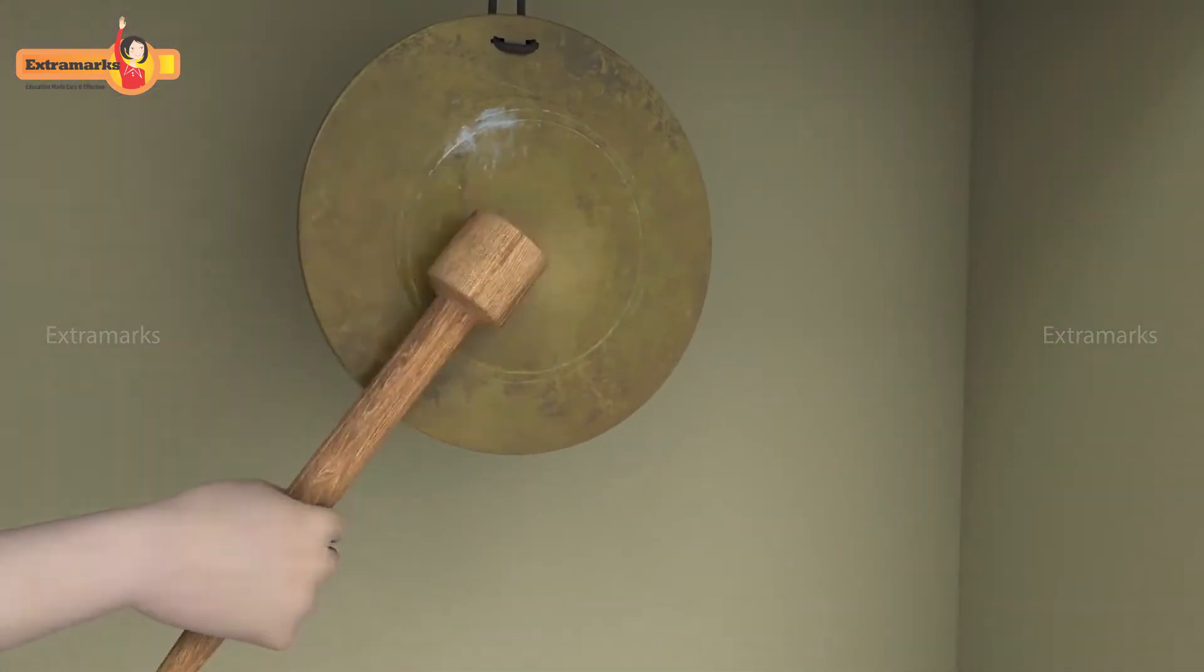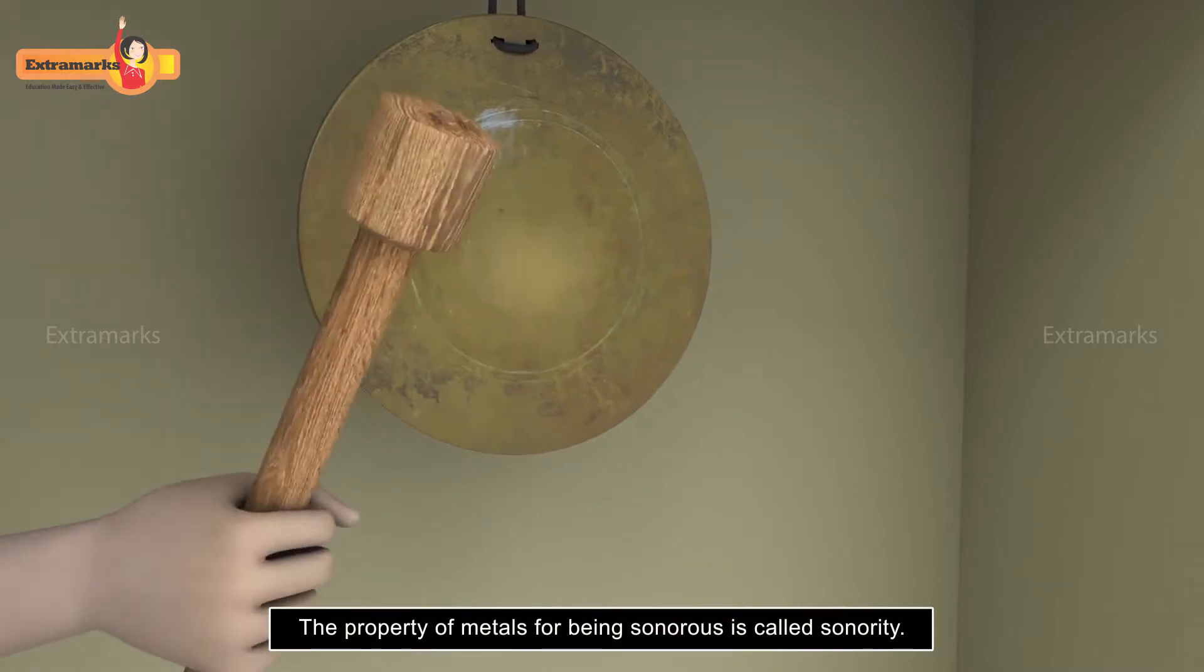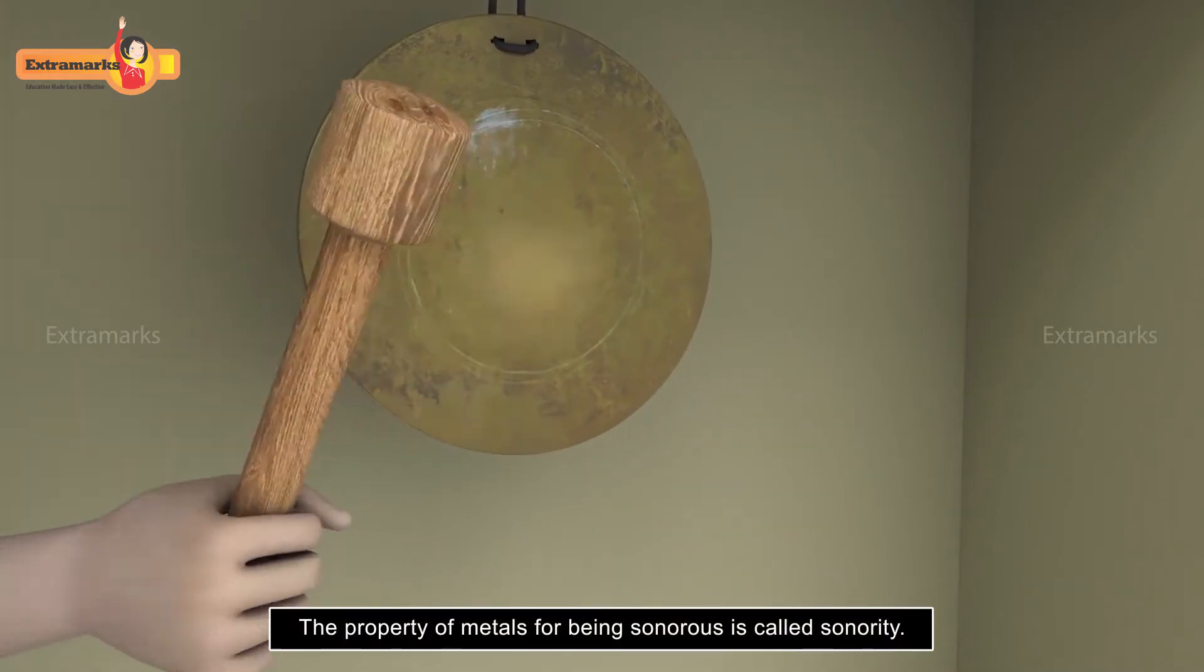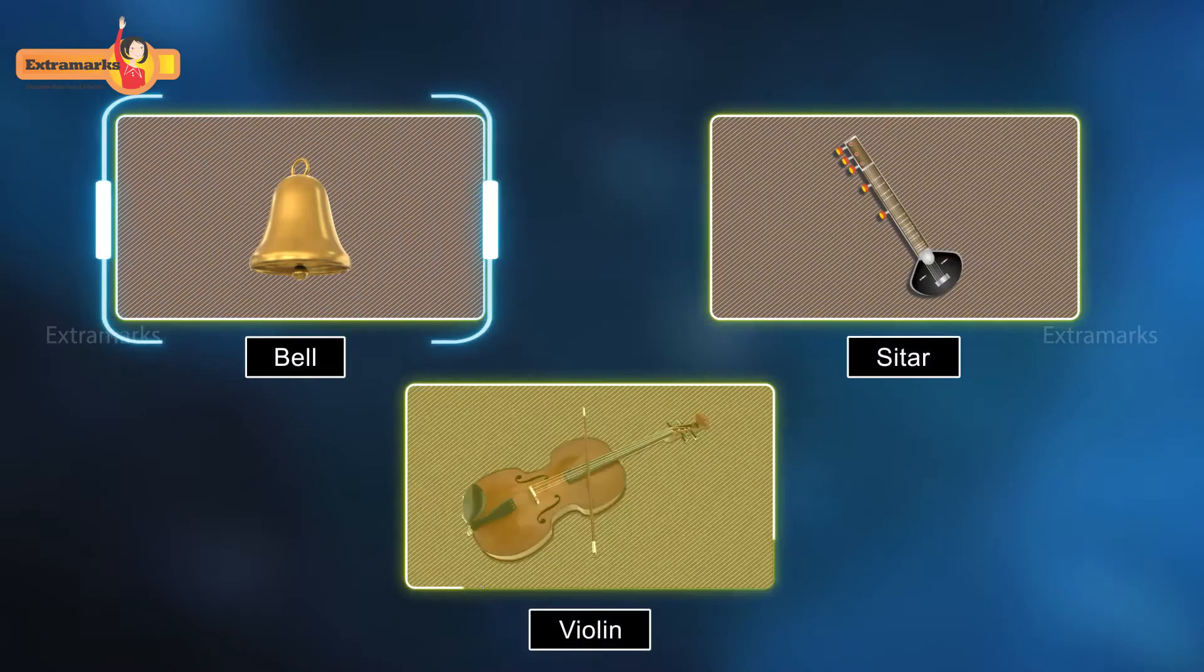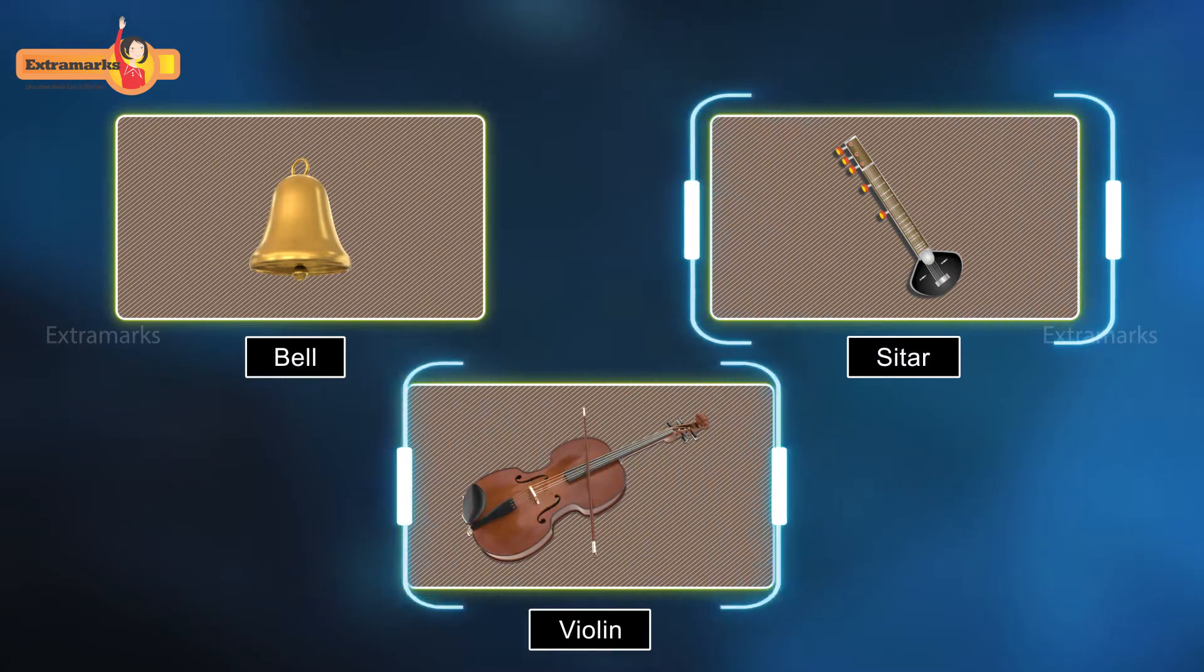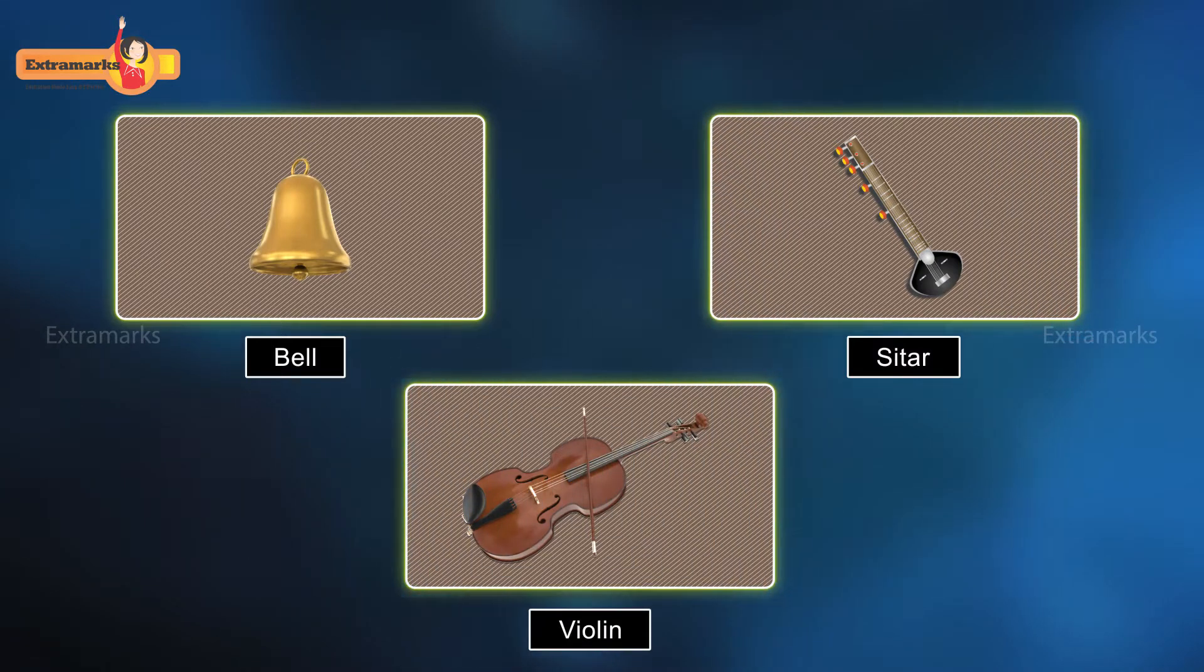This property is called sonority, and a metal is said to be sonorous. It is the property of sonority which is used for making bells and strings of musical instruments like sitar and violin.